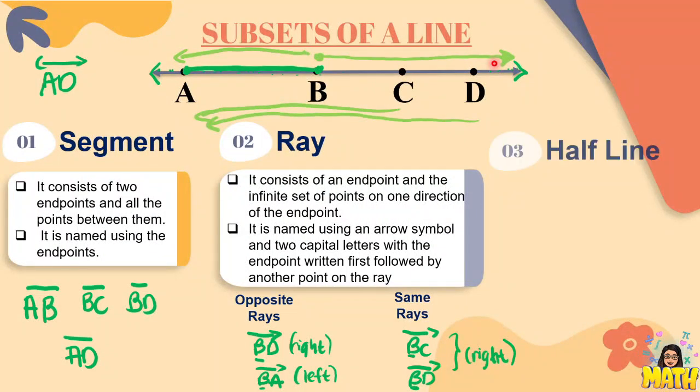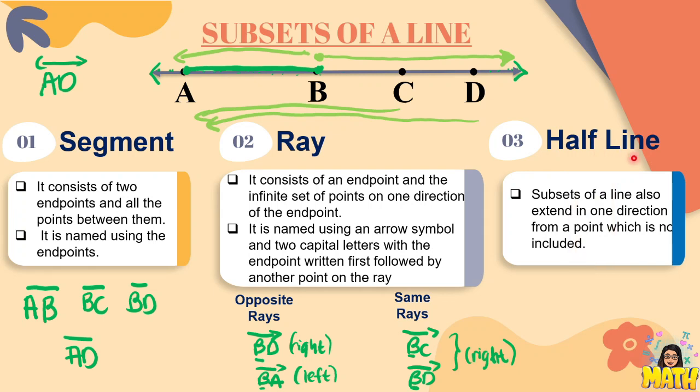And the last part, or subset of a line, is what we call the half line. It also extends in one direction from a point, but this time, that point is not included. So actually, halos kapareho lang din siya ng ray. However, here, ang symbol neto is this. For example, half line BD, which means we do not include B to that line.